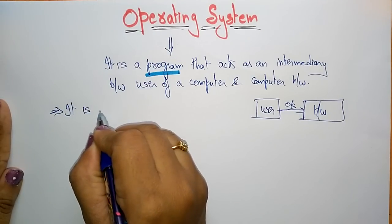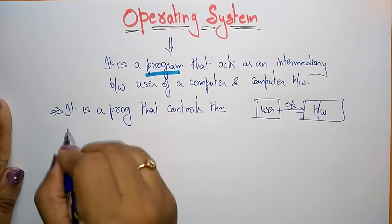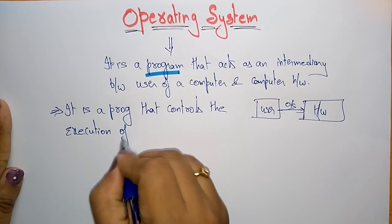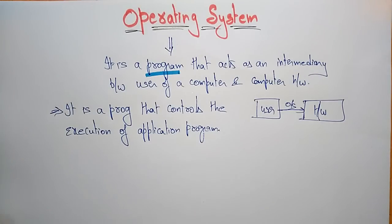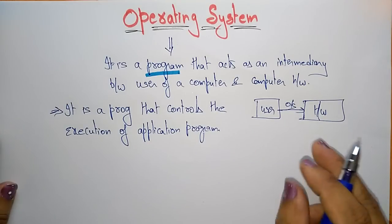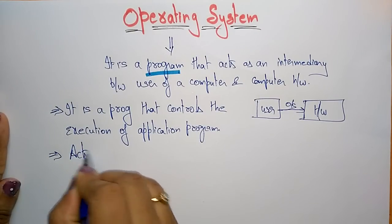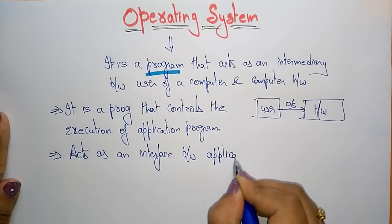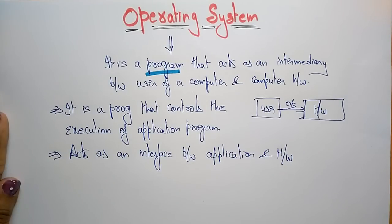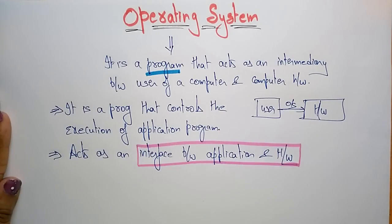The operating system is also a program that controls the execution of application programs. In brief, we can say the operating system acts as an interface between application and hardware. In general, you can call the operating system an interface between the application and hardware.